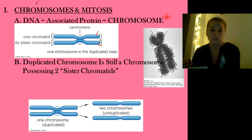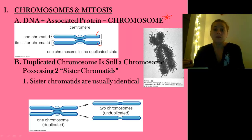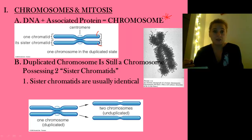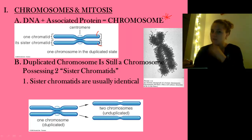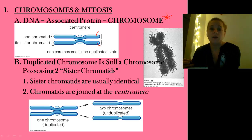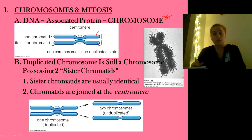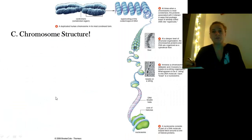Sister chromatids are usually identical because the DNA replicates itself, ideally identically, although sometimes mistakes are made. When a chromosome is duplicated, it's joined at what we call the centromere — that point where it's really tightly joined together, this condensed point here.